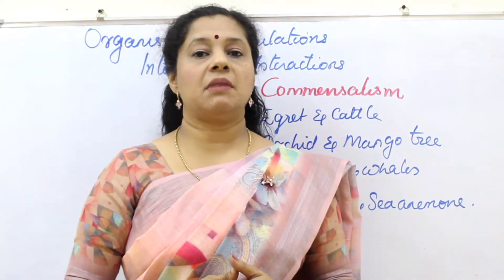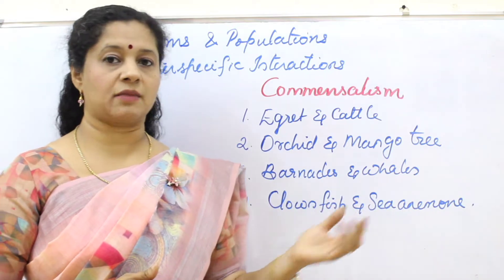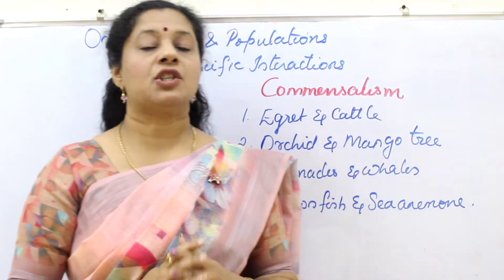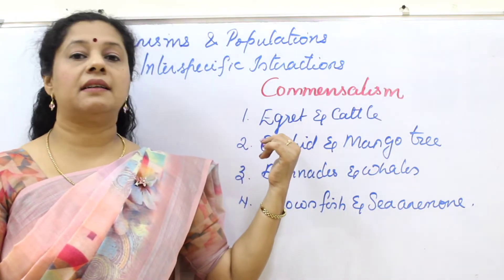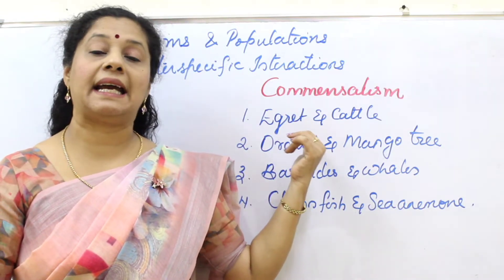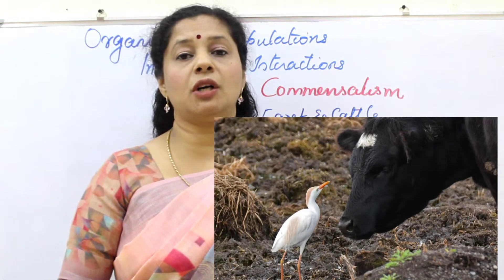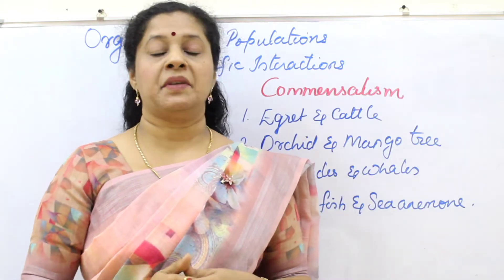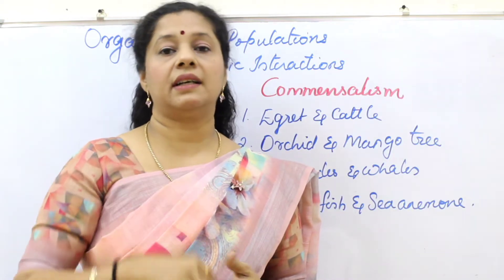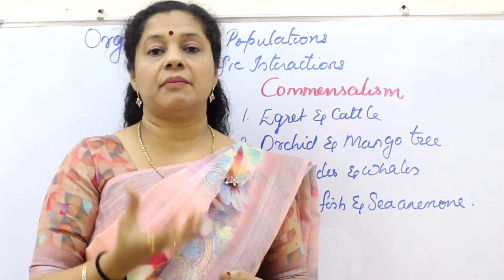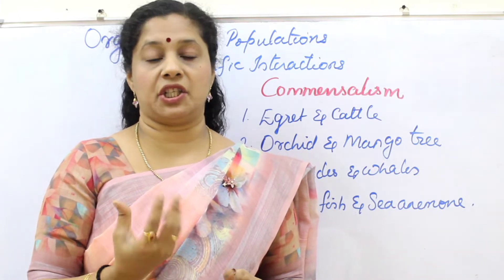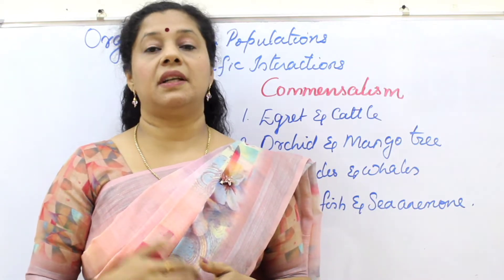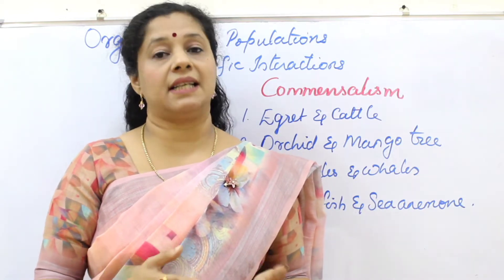There are many examples of commensalism — four examples are given in the textbook. The first one is the relation between egret and cattle. A small bird called egret is always foraging near the cow where it is feeding. When the cow is browsing on grass, it flushes up worms and other things, making it easy for the egret to get food. The cow is neither benefited nor harmed by the bird, but the bird is getting benefited.